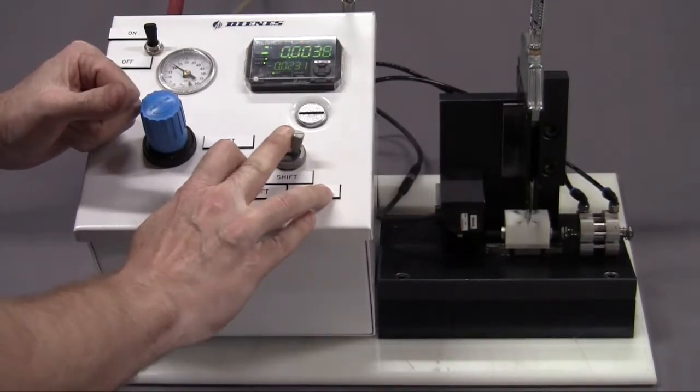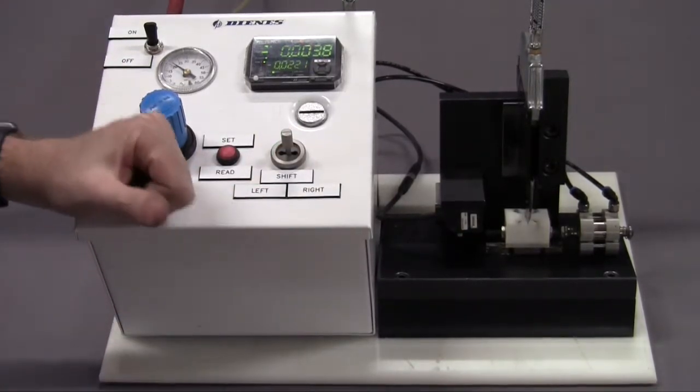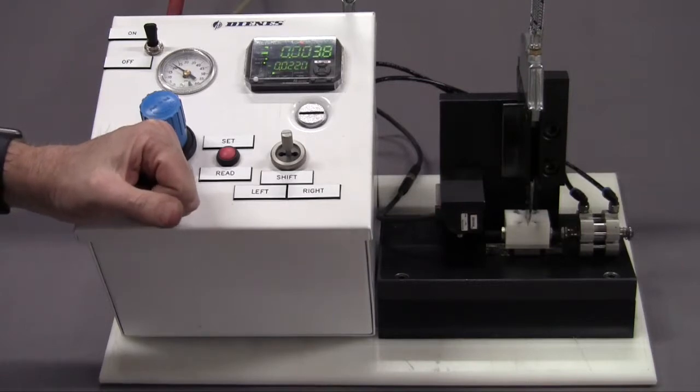3.8 tenths worth of wobble, which means you're going to be able to hold your cut within plus or minus 6 thousandths very easily if these two holders are set side by side.